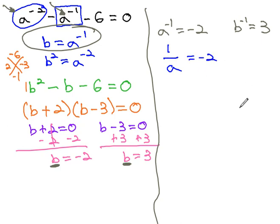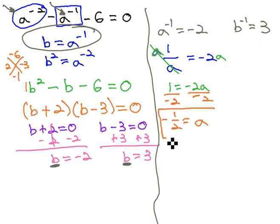which we can solve by multiplying both sides by the LCD of a. That gives us 1 equals negative 2a, and then divide both sides by negative 2 to get our first solution for a to be negative 1 half.